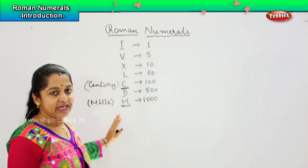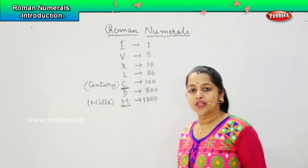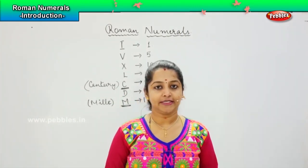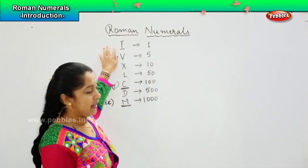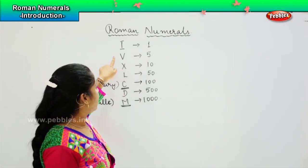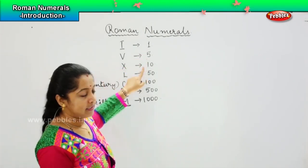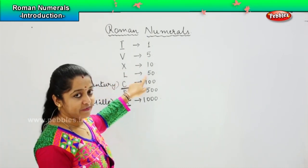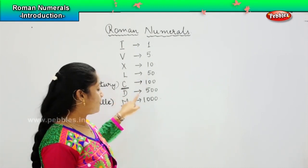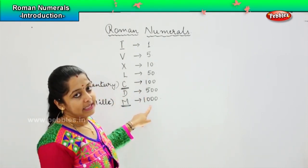Based on these seven alphabets, we are going to learn how people during that time used to calculate. So shall we revise it once again? I denotes 1, V represents 5, X represents 10, L represents 50, C represents 100, D represents 500, and M represents 1000.